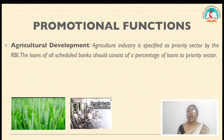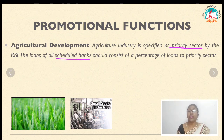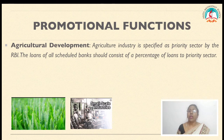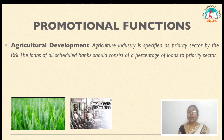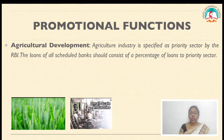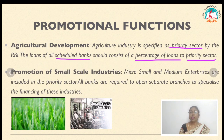RBI also helps agricultural industries. Agriculture is specified as a priority sector by the RBI, and loans of all scheduled banks must contain a percentage directed to the priority sector. RBI has established NABARD — the National Bank for Agricultural and Rural Development — so that a percentage of interest can benefit farmers. RBI works in close association with NABARD to help agriculture in India, especially the farmers.